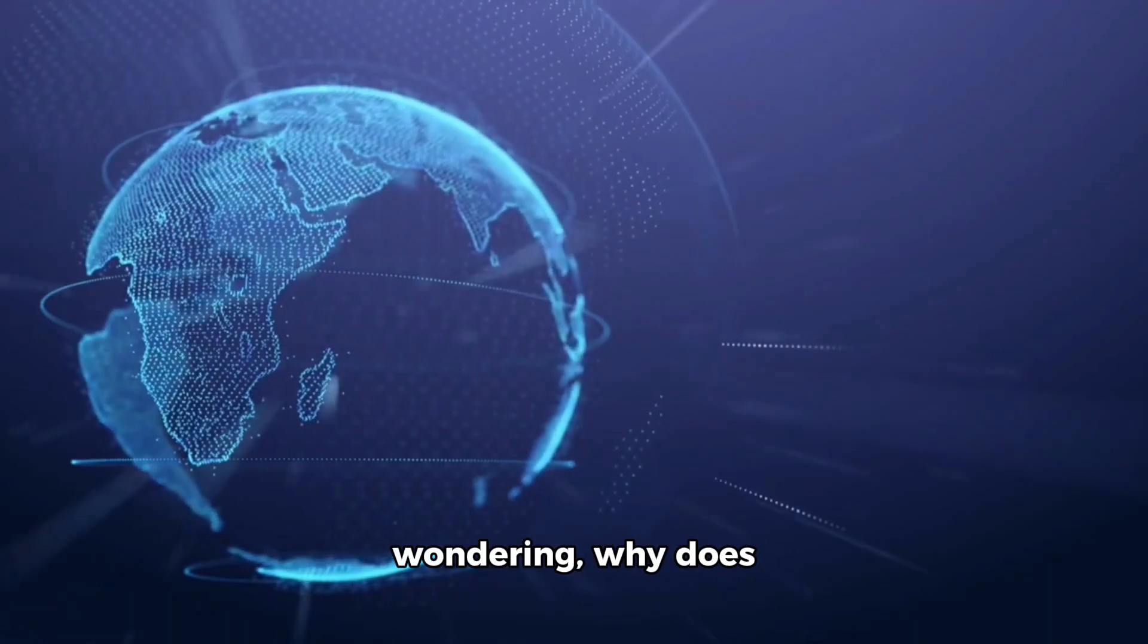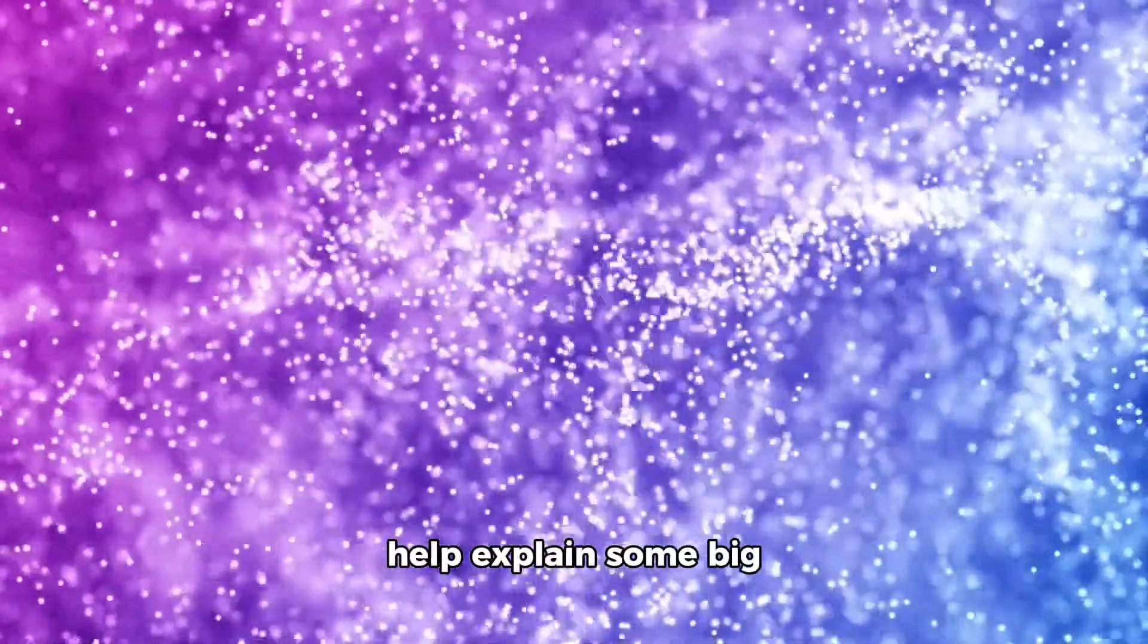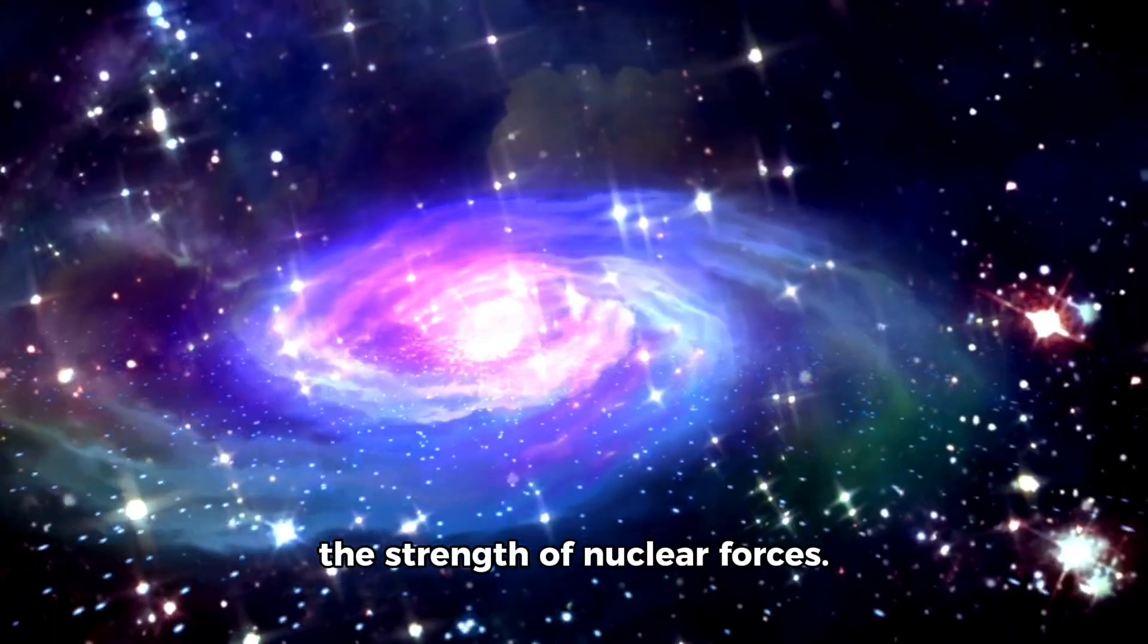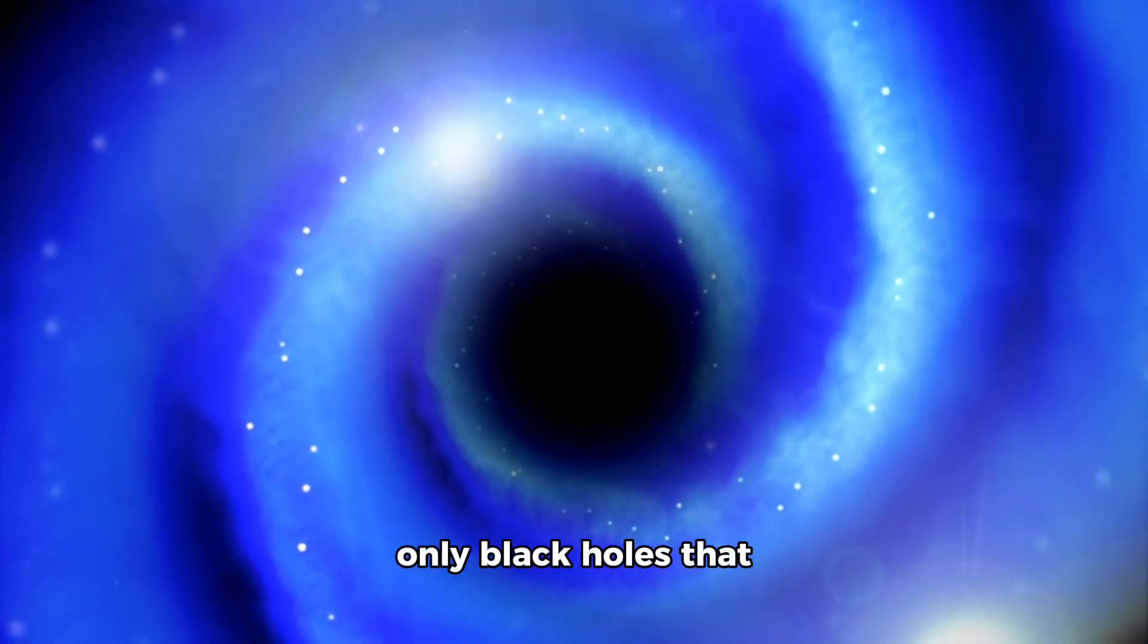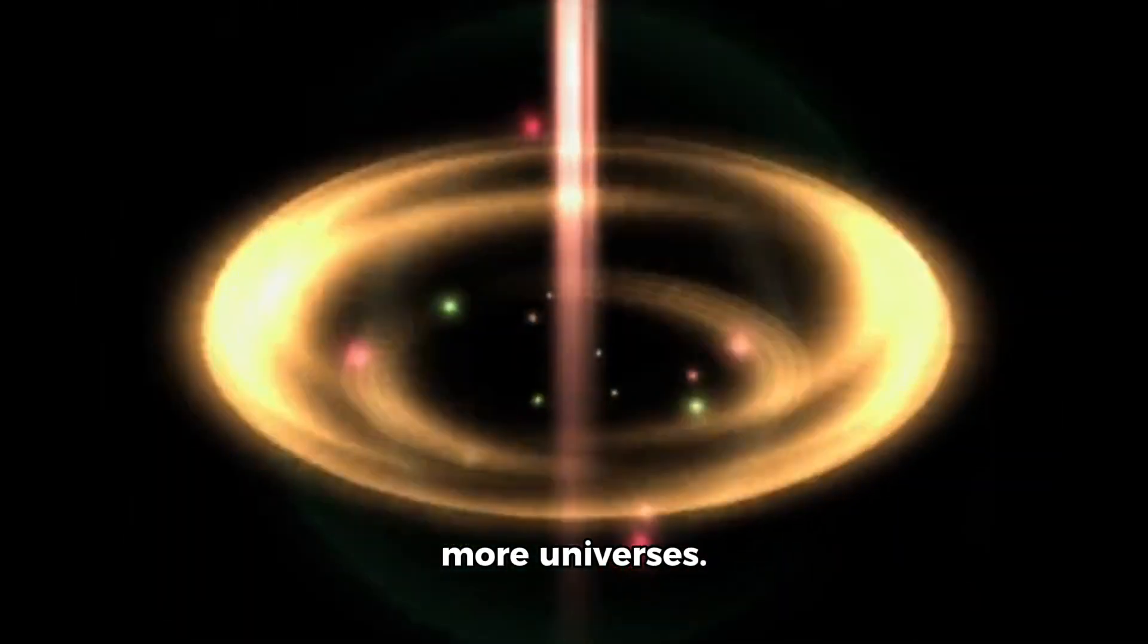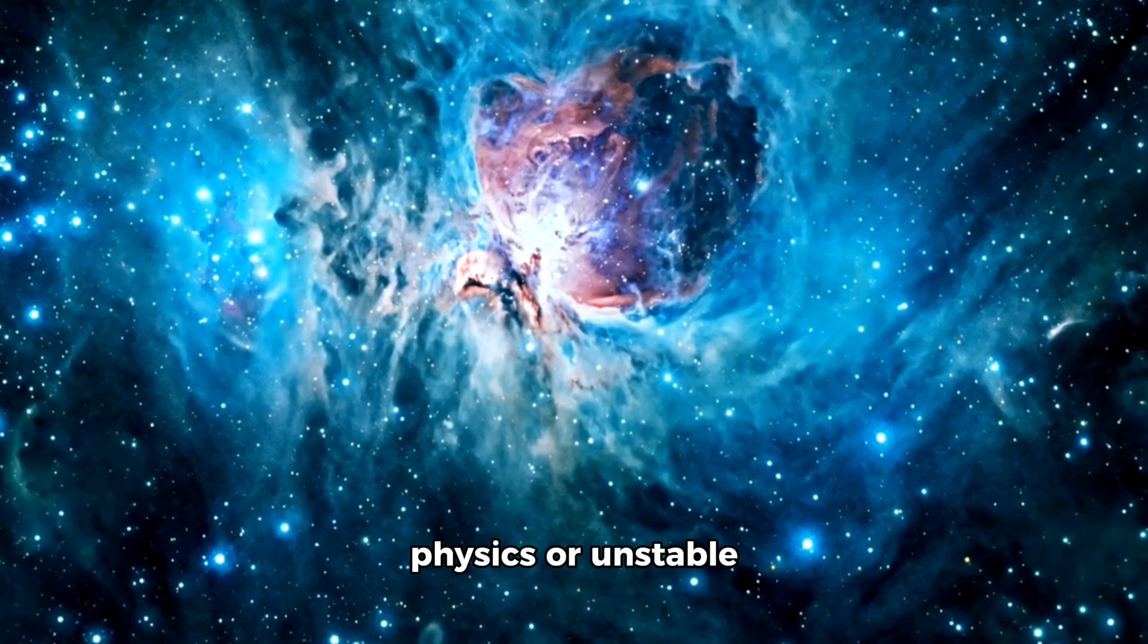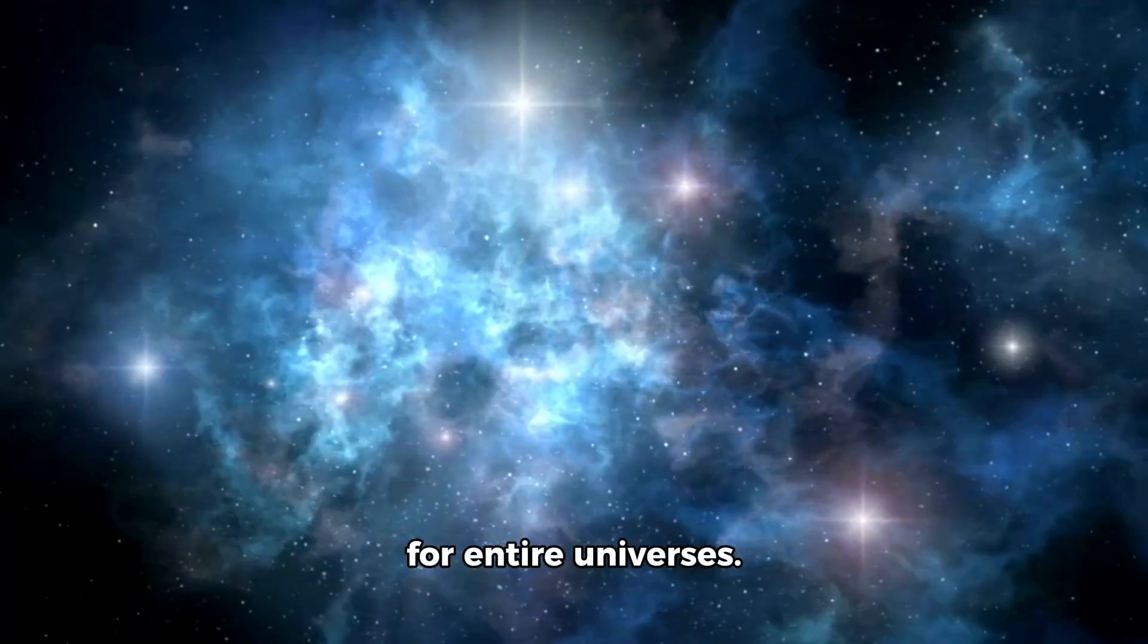Now, you might be wondering, why does this idea even matter? Well, aside from being wildly cool, it could help explain some big puzzles, like why the fundamental constants of physics seem so perfectly tuned for life. Gravity, electromagnetism, and the strength of nuclear forces, it's all just right. Coincidence? Maybe not. According to this model, only black holes that generate stable, long-lasting universes survive and go on to reproduce more universes. So over time, universes that work stick around. Kind of like natural selection, but on a cosmic scale. The ones with chaotic physics or unstable constants, they vanish. It's like evolution, but for entire universes. Let that simmer for a second.